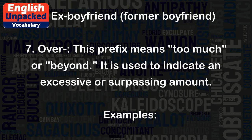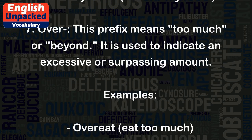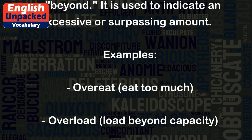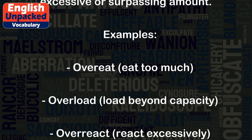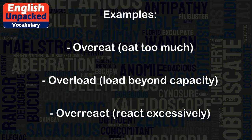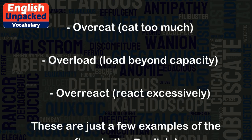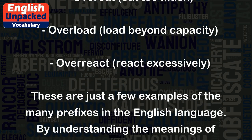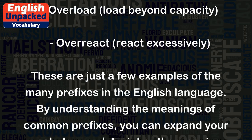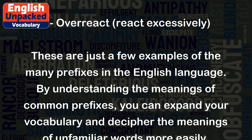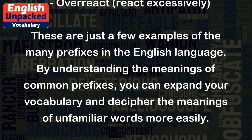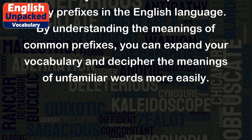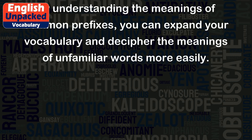It is used to indicate an excessive or surpassing amount. Examples: Overeat — eat too much. Overload — load beyond capacity. Overreact — react excessively. These are just a few examples of the many prefixes in the English language. By understanding the meanings of common prefixes, you can expand your vocabulary and decipher the meanings of unfamiliar words more easily.